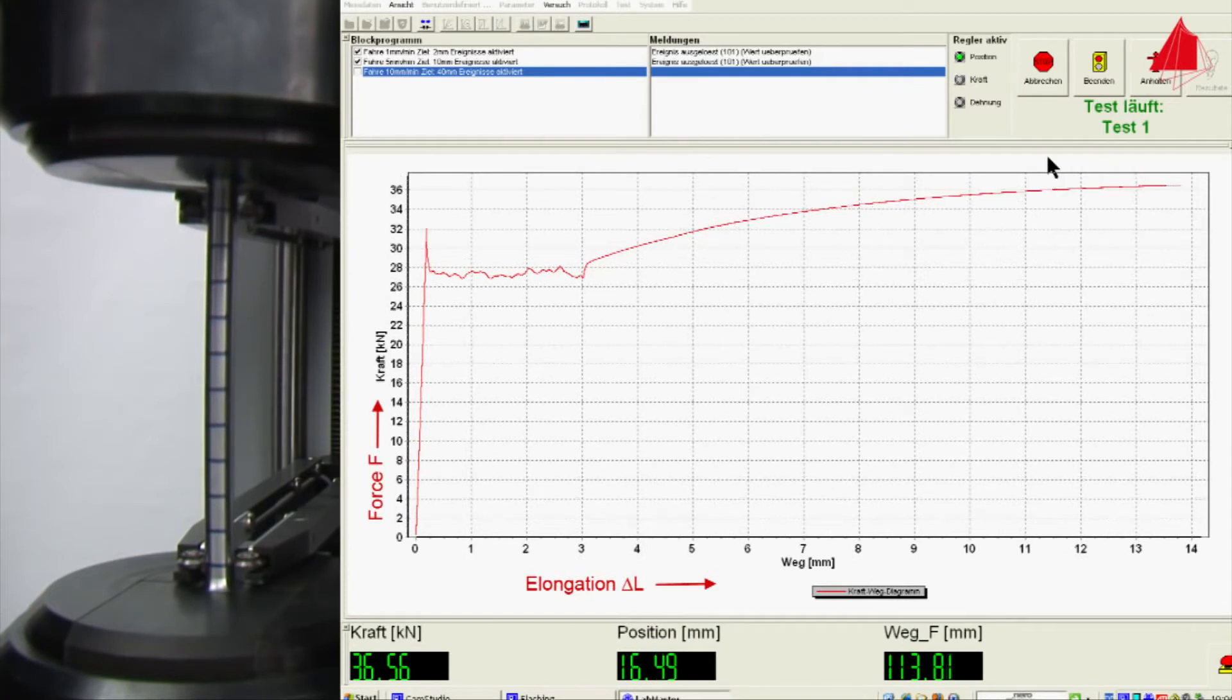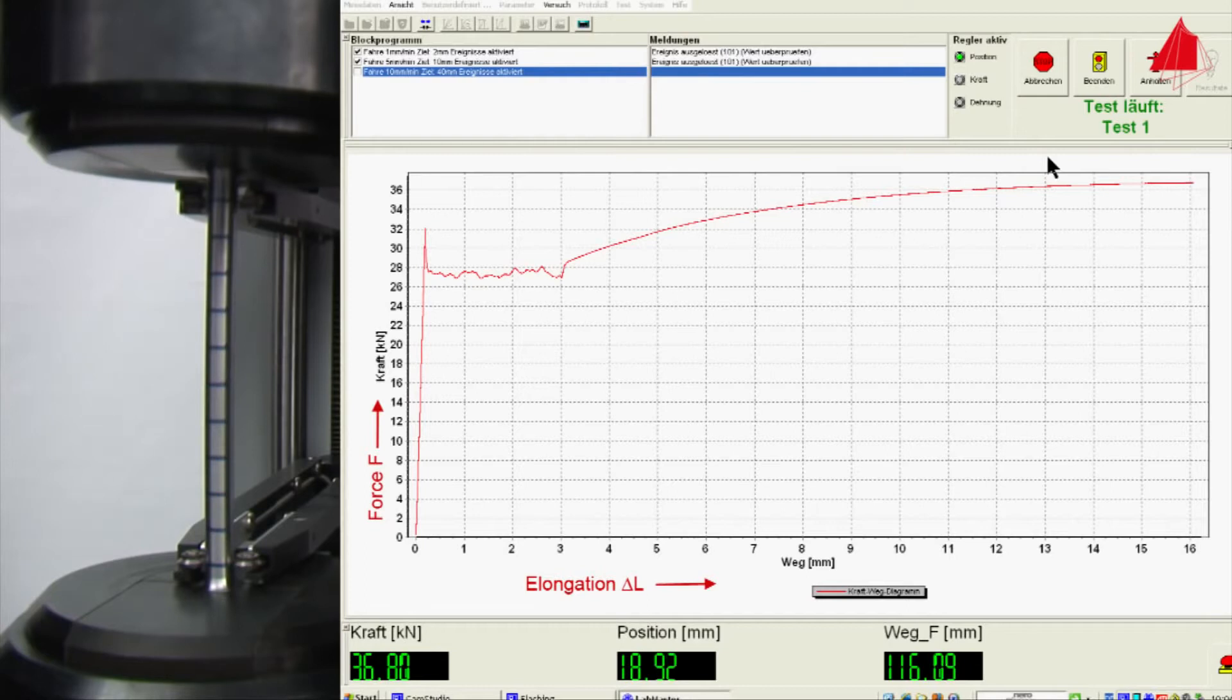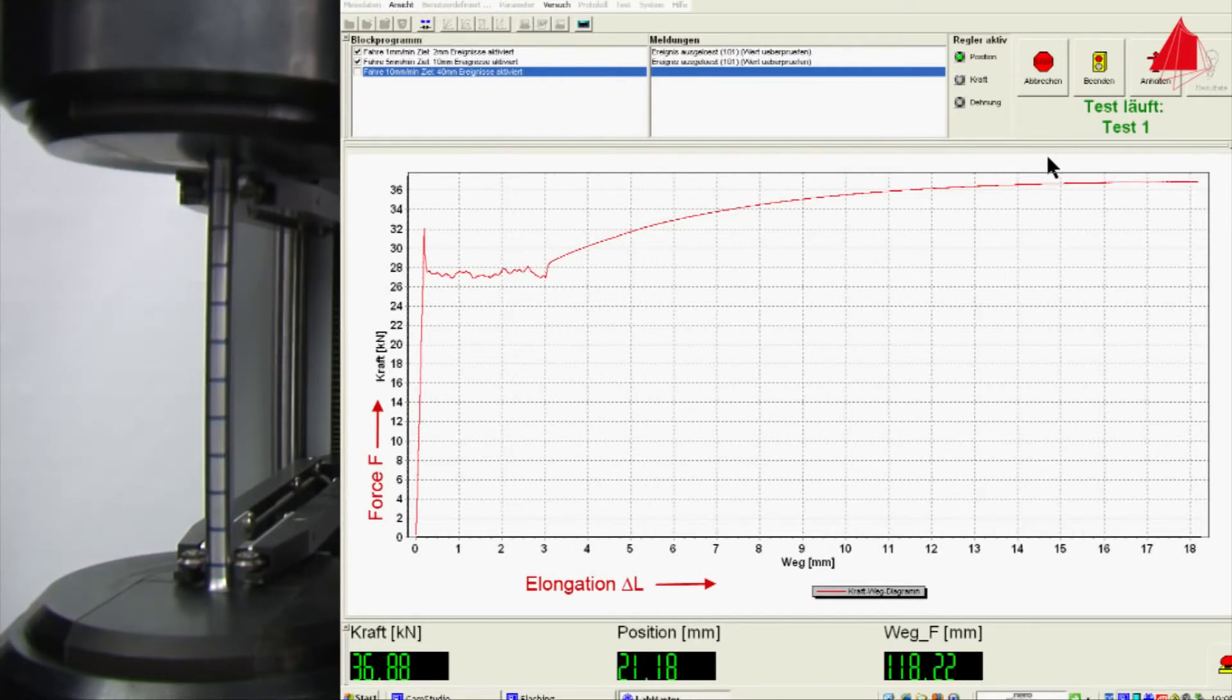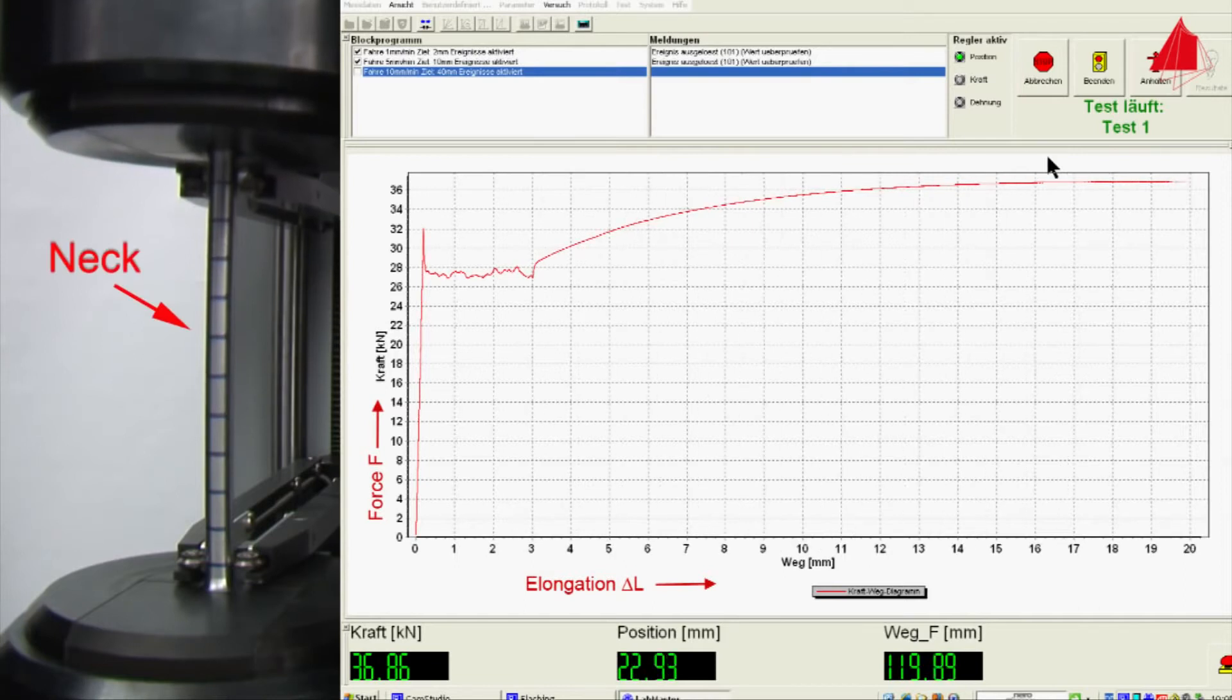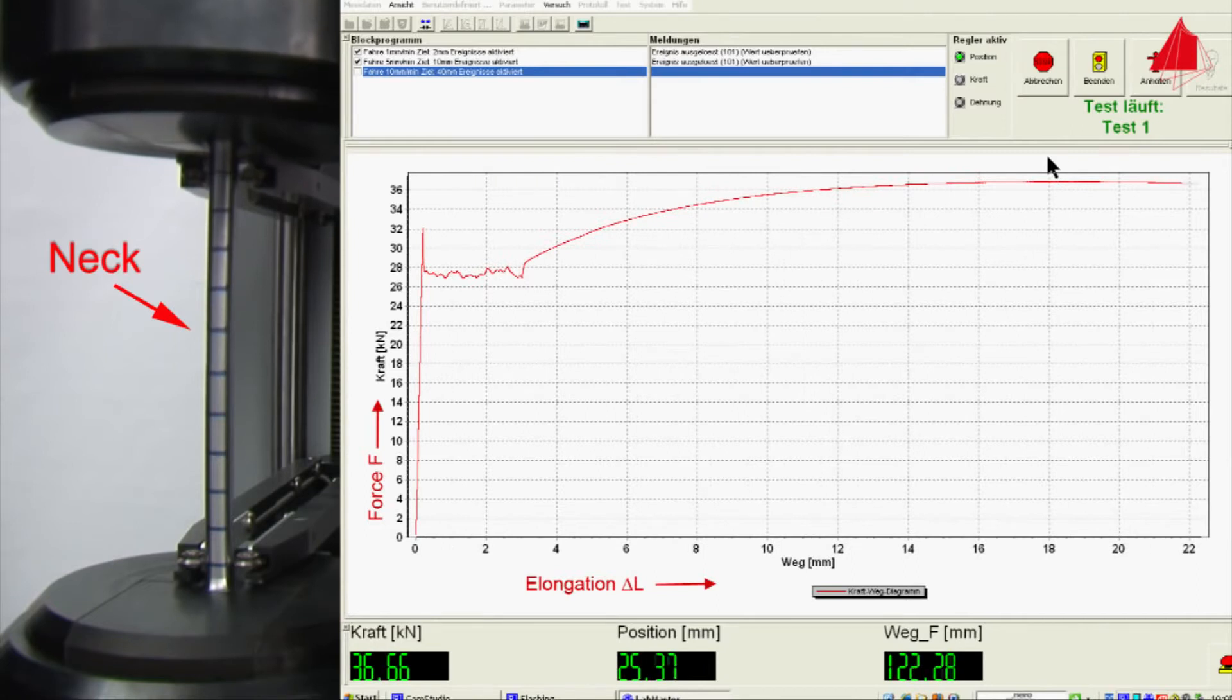As soon as the maximum force is reached, a neck begins to form at one point of the test piece. All further plastic deformation now only takes place at the neck, and eventually the test piece fractures there.